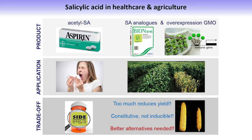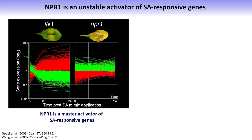Downstream of salicylic acid is NPR1, a master regulator of salicylic acid-responsive genes. If you apply salicylic acid to a wild-type plant, you get a dramatic reprogramming of the genome — around 2,000 genes out of the Arabidopsis genome of approximately 26,000 are either induced (shown in red) or repressed (shown in green) over time. The NPR1 mutant, on the other hand, is completely blind to salicylic acid — genes that switched off in wild type stay on, and vice versa — making this mutant highly susceptible to biotrophic diseases.